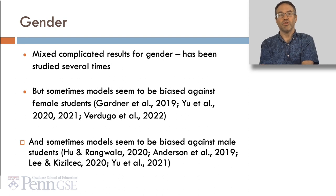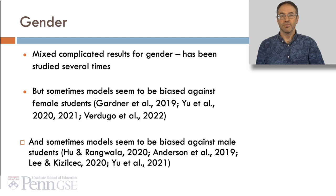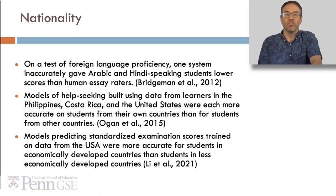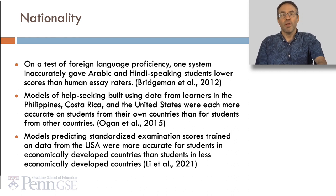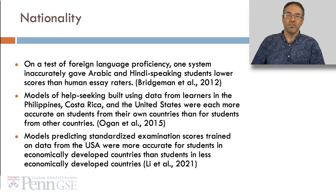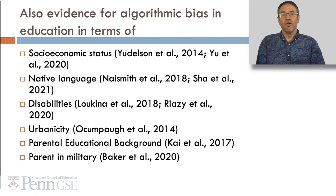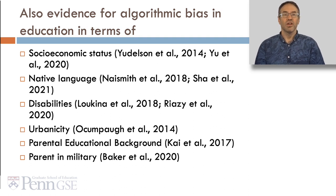Gender: There have been mixed, complicated results for gender studied several times — sometimes models seem to be biased against female students, and sometimes against male students. Nationality: On a test of foreign language proficiency, one system inaccurately gave Arabic and Hindi-speaking students lower scores than human essay raters. Models of help-seeking built using data from learners in the Philippines, Costa Rica, and the United States were each more accurate on students from their own countries — curiously, Costa Rica was much more the outlier. And models predicting standardized examination scores trained on US data were more accurate for students in economically developed countries than in less economically developed countries. There's also evidence for algorithmic bias in terms of socioeconomic status, native language, disabilities, urbanicity, parental educational background, and even whether a student has a parent in the military.